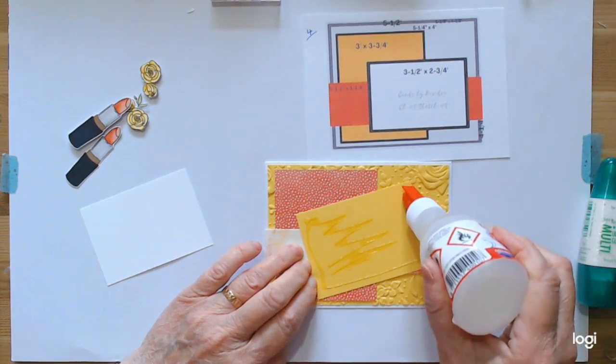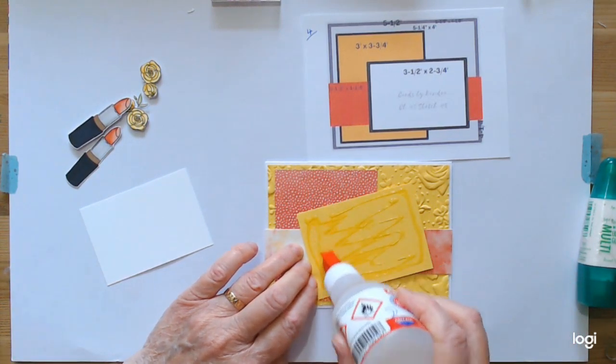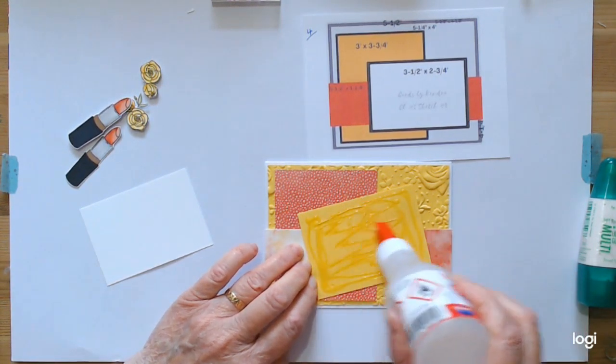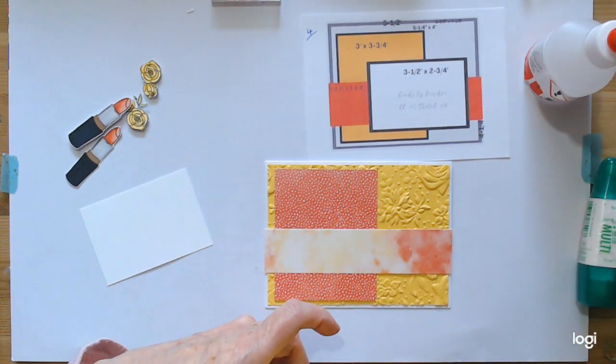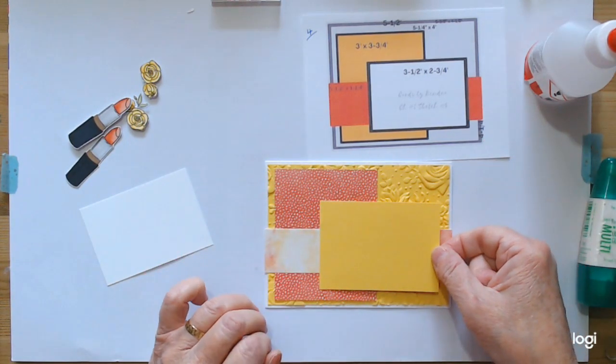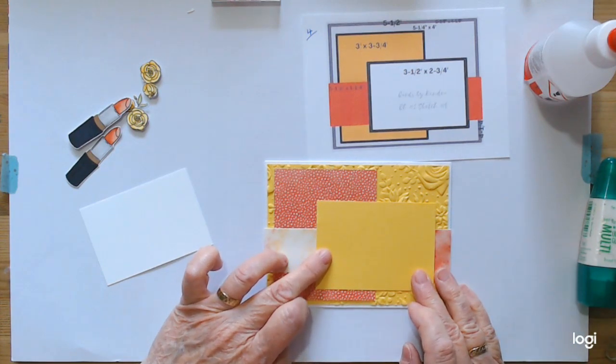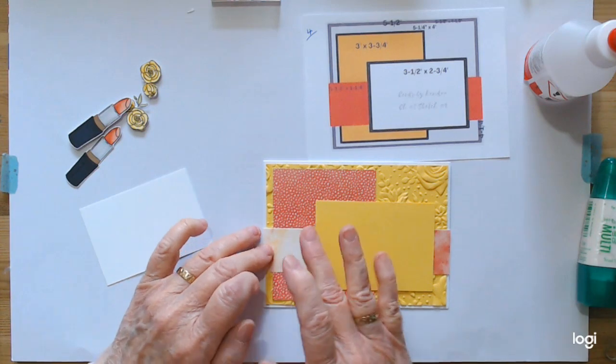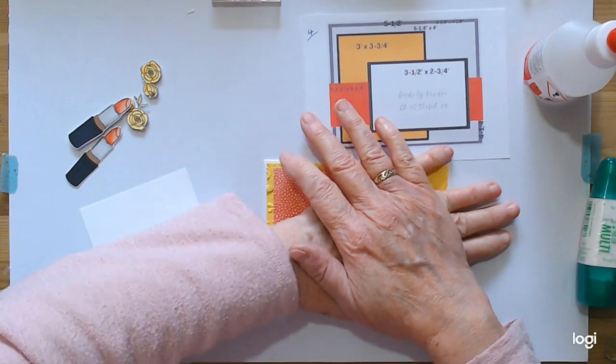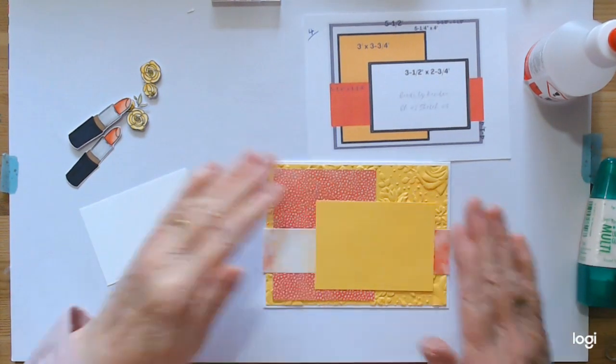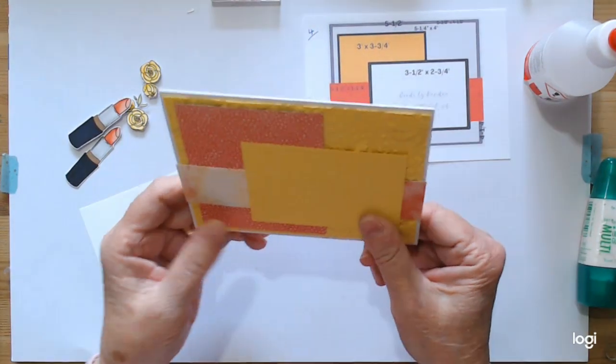And I've went ahead and stamped out the two lipsticks and I'll go with a matching sentiment. So where do we want this, about here? So you can see a wee bit of the orange coming through, see a bit of the yellow, and it gives it a nice tie-in with the colors.